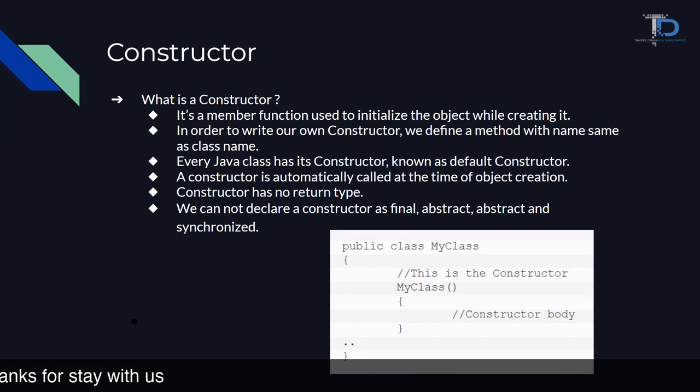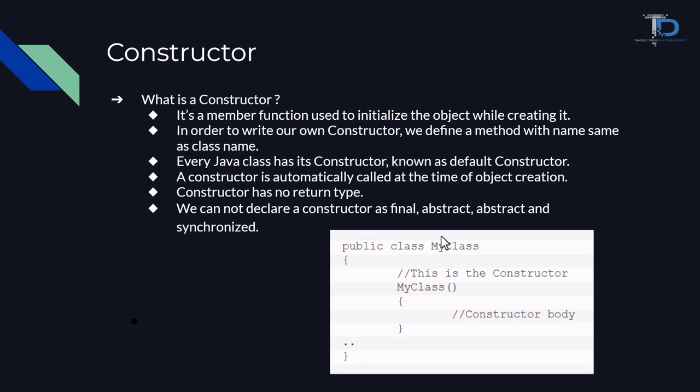In order to write our own constructor, we define a method with the name of the class name. If we have our own constructor to write, then we write a method with the same class name. It means that our class name and our constructor name should be the same.